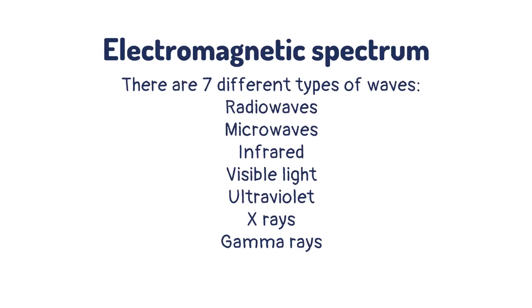In the electromagnetic spectrum there are seven different types of waves: radio waves, microwaves, infrared, visible light, ultraviolet, x-rays, and gamma rays.